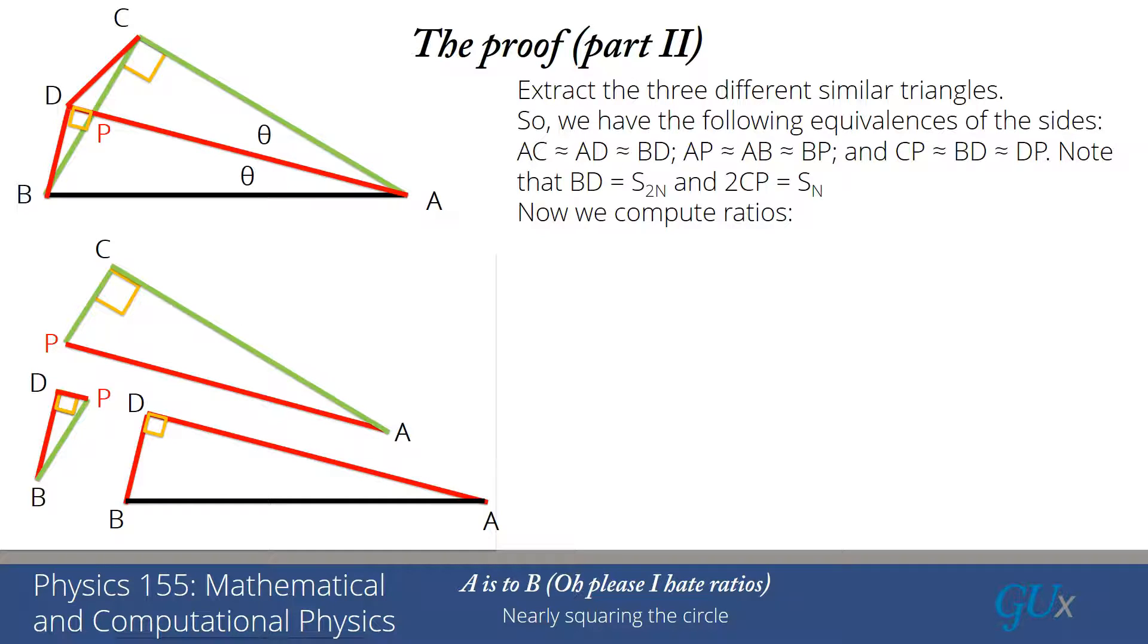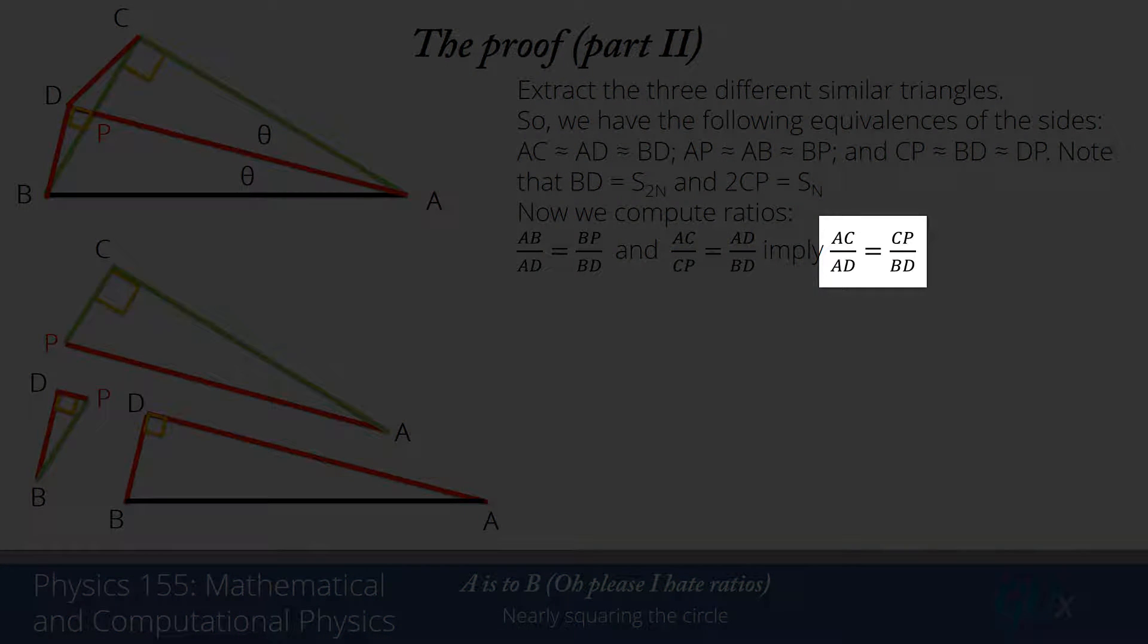All right. So now we're going to compute some ratios. The Greeks were all about ratios. And let's look carefully at what these are. So the first ratio is going to be AB to AD. That's the ratio of the hypotenuse of the lower triangle to one of its legs. And that ratio should be exactly the same as the ratio of the hypotenuse in the small triangle, BP, to its corresponding edge, BD. Similarly, we look at the ratio of AC to CP. That's the ratio of the two legs of the upper triangle. And that will be related to AD divided by BD, which is the ratio of those two similar legs for the lower triangle. Now we're going to take that second relation, and we're going to cross multiply to interchange and move the AD from a numerator to a denominator, and move the CP from a denominator to a numerator. And we now get the ratio of AC to AD is equal to CP over BD.